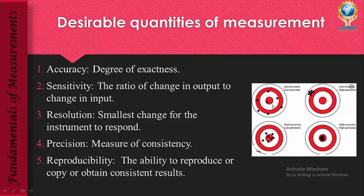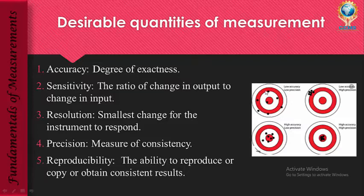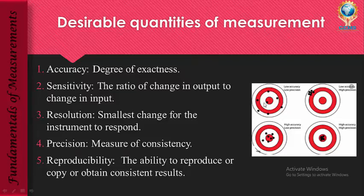I have given a small figure so that you can understand accuracy and precision better. Here you can see a circle, and I want all my dots to fall within this circle. In the first case, the black dots are scattered here and there — they are misaligned — so it is low accuracy. The accuracy is low and the precision is also low because you get a random set of different values rather than consistent ones.